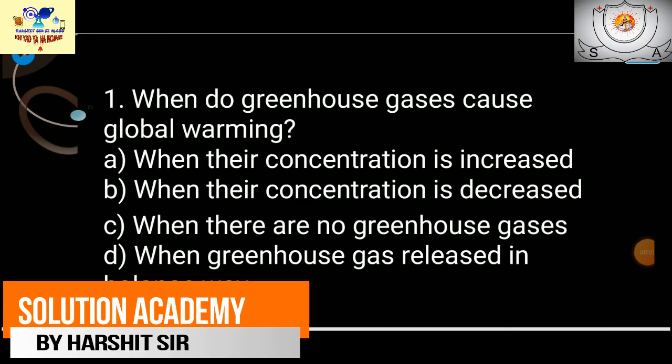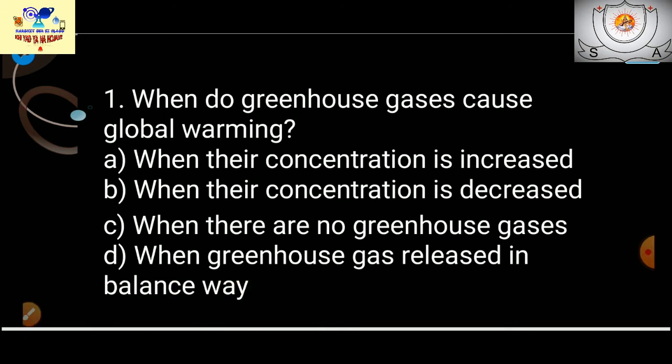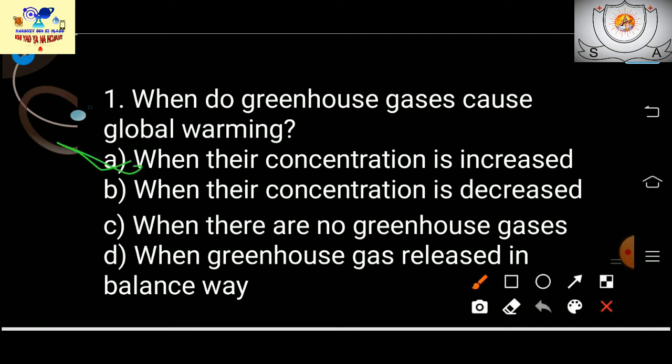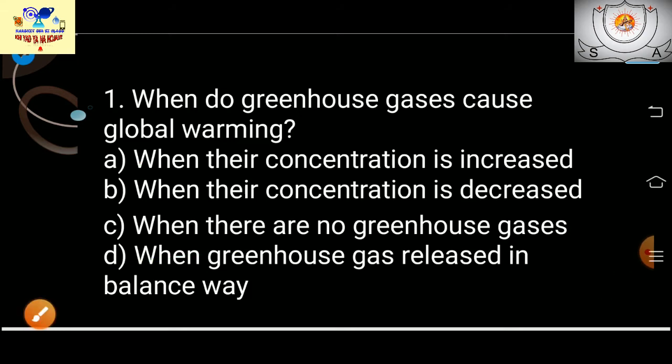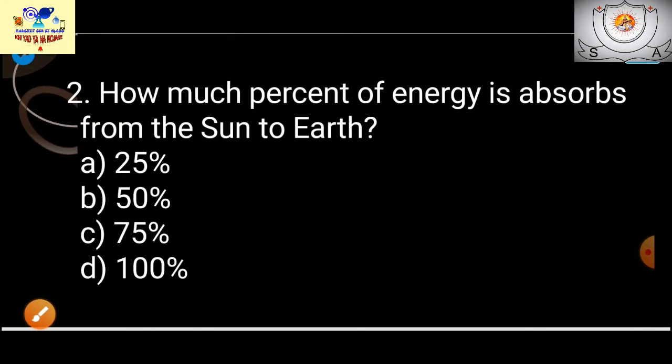Question number one: When do greenhouse gases cause global warming? The options include when their concentration is increased, when their concentration is decreased, when there are no greenhouse gases, or when greenhouse gases are built. The answer is: when their concentration is increased.